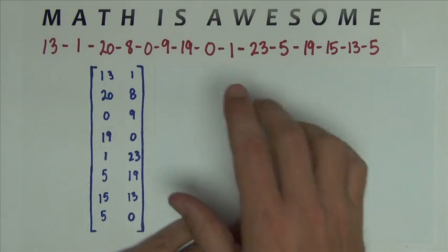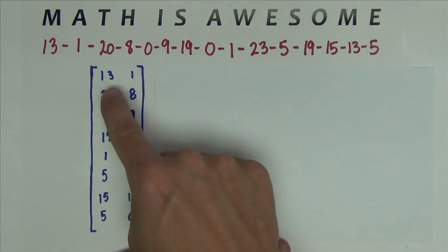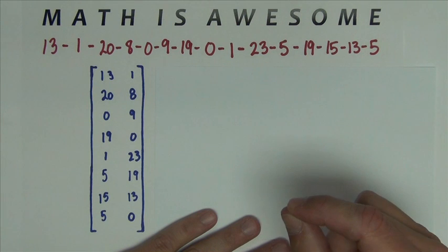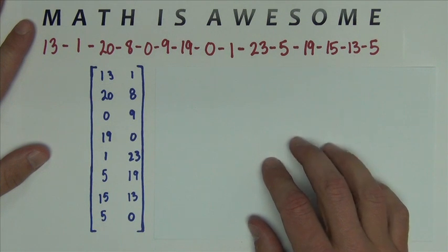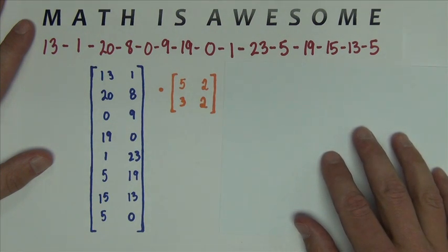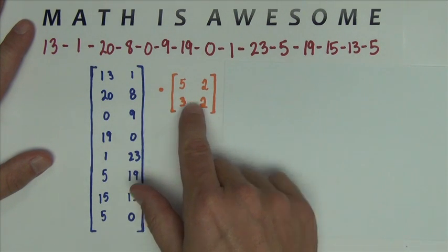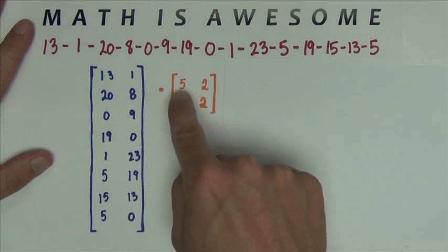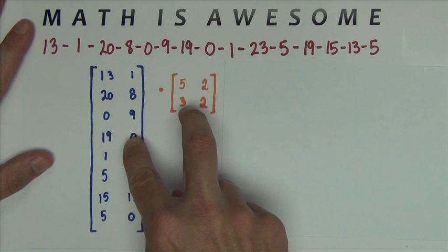So back to our problem. We've got our message, math is awesome. We've got it translated into numbers, we had those numbers inputted into a matrix. We have to pick a 2 by 2 matrix that has an inverse. Now you can pick whatever numbers that you want as long as their determinant isn't 0. I choose to keep my numbers kind of small, I stayed away from negative numbers, but really whatever you wanted would work. So I picked the matrix [5, 2; 3, 2]. If I find the determinant, I get 10 minus 6 and 10 minus 6 is not 0. This is good enough for me. So we're going to multiply these two matrices together.